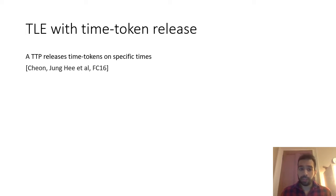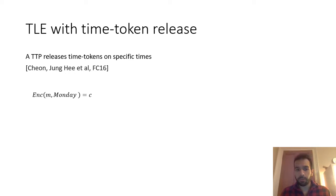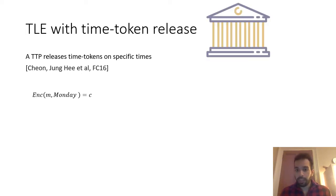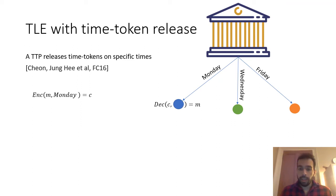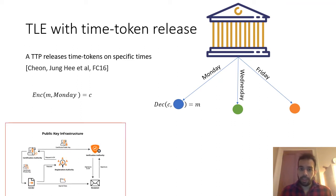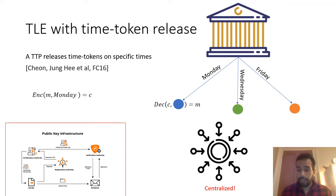Another TLE construction is one based on time token release, where a trusted third party releases time tokens at specific times. For example, if we want to encrypt a message M that will be retrievable on Monday, we use the information 'Monday' and the result is a ciphertext C. The trusted third party releases tokens: the blue one on Monday, the green one on Wednesday, the orange one on Friday. By using the decryption algorithm with the blue token — the Monday one — anyone can retrieve the message M. These constructions are based on public key infrastructure and are unfortunately centralized.